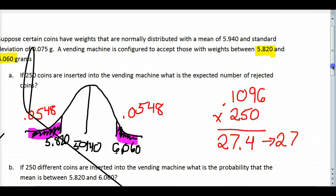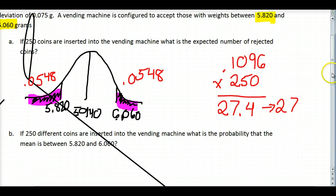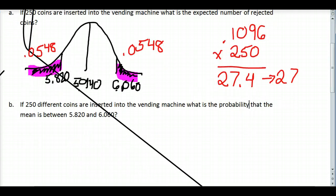Now for part B of this problem, we have a little bit more information. We have 250 coins inserted into the vending machine. What is the probability that the mean of these coins, so if I were to pull all 250 coins out and weigh each individually, what's the probability that the average is in between these two limits?